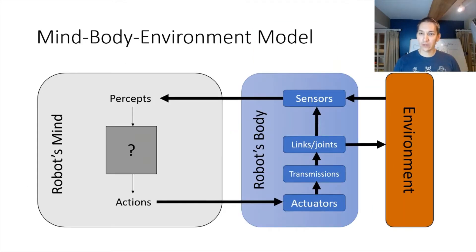When we try to model how the robot interacts with the body interacts with the mind, and the body also has to interact with the environment, we can build this mind-body environment model. On the right is the environment, which provides the external source of context for the robot's body. The robot's body then interacts with the environment through its links and joints, and also through its sensors. The links and joints provide force against the environment to pick up objects or to move forward if you're driving a car, an autonomous vehicle.